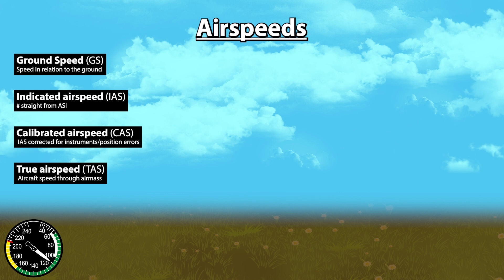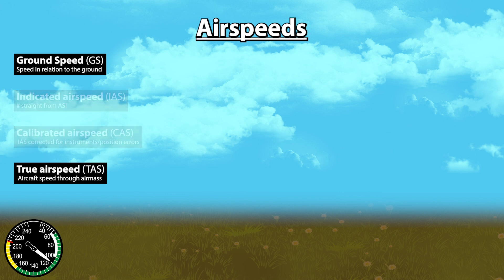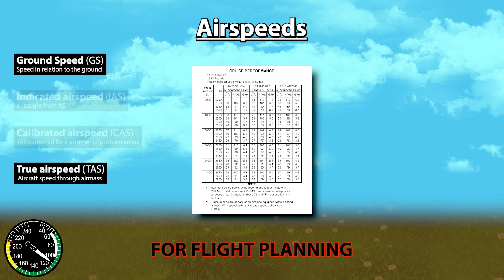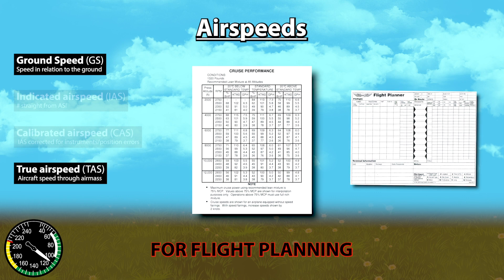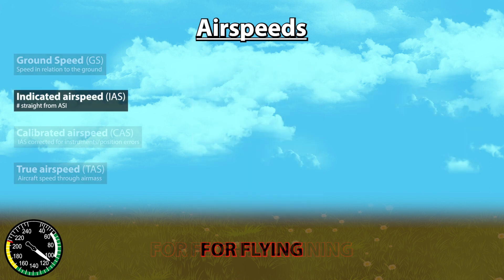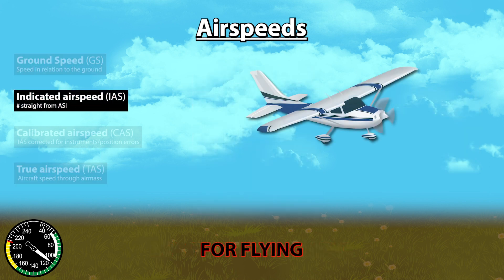If this all still sounds complicated, remember that ground speed and true airspeed are primarily used for flight planning purposes. Your POH will reference them in performance charts, and you will need them to fill out a navigation log. Whereas indicated airspeed is what you want to be looking at while flying. All the V speeds are indicated airspeed.